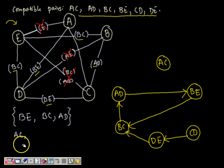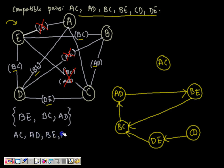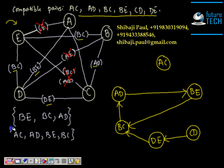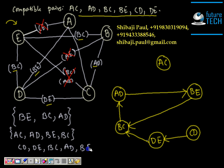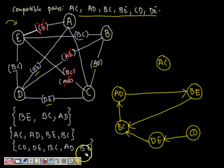This is a closed compatible where compatible pairs along with their implied pairs are taken in the same set. We can find more closed compatibles. For example, taking AC alone is closed since AC has no implied pair. We can also take AD, BE, and BC together as a closed compatible. Taking CD, DE, BC, AD, and BE is also a closed compatible.